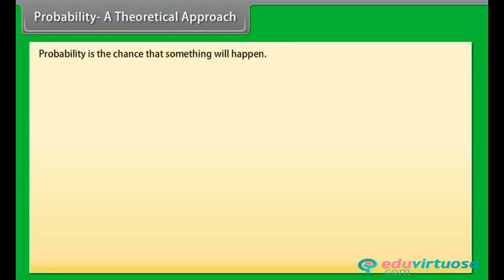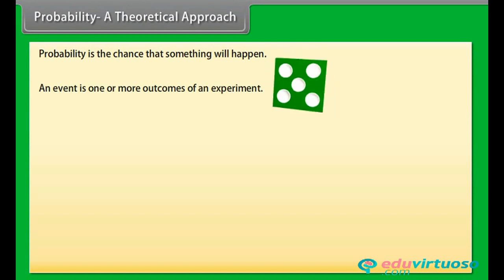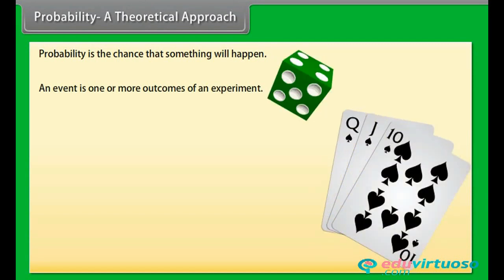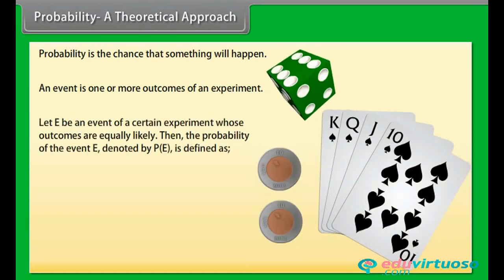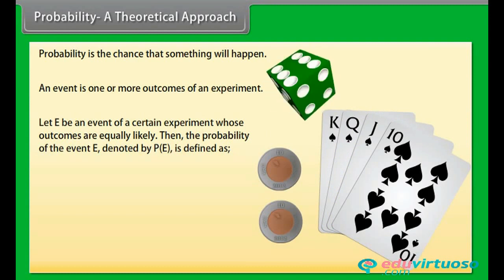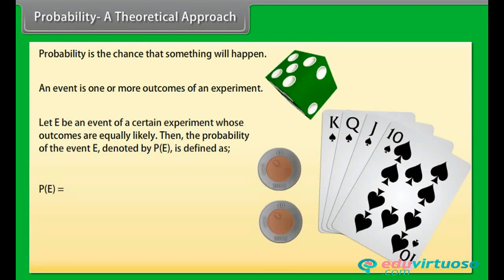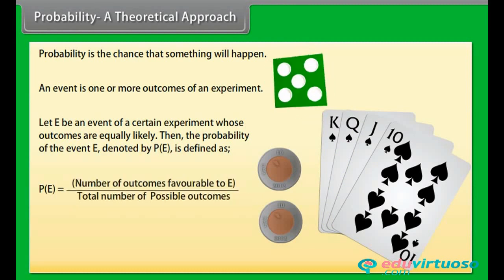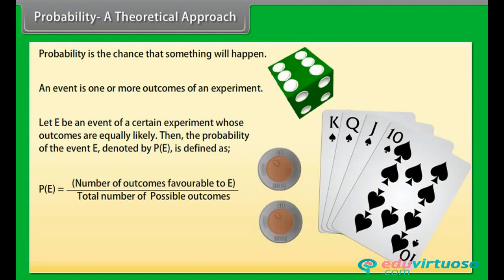Probability — a theoretical approach. Probability is the chance that something will happen. An event is one or more outcomes of an experiment. Let E be an event of a certain experiment whose outcomes are equally likely. Then the probability of event E, denoted by P(E), is defined as: Probability of event E equals number of outcomes favorable to E divided by total number of possible outcomes.